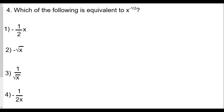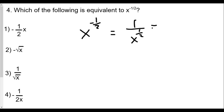Question number 4: which of the following is equivalent to x to the negative 1/2 power? Remember that whenever we have a negative exponent, it does not mean a number is negative. Instead, we take 1 over that same base but to the positive exponent — almost like the term crosses the fraction bar and the sign of the exponent changes. So x to the 1/2 power is really the square root of x, making this 1 over the square root of x — choice 3.